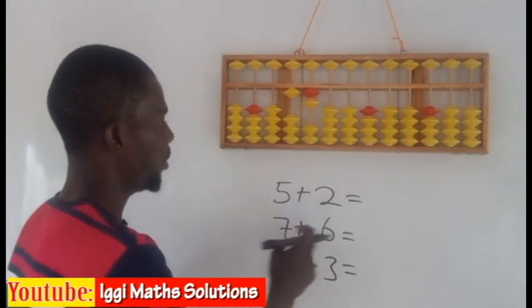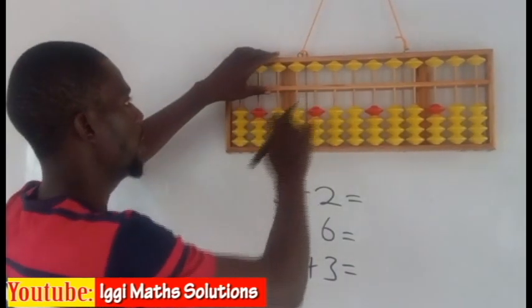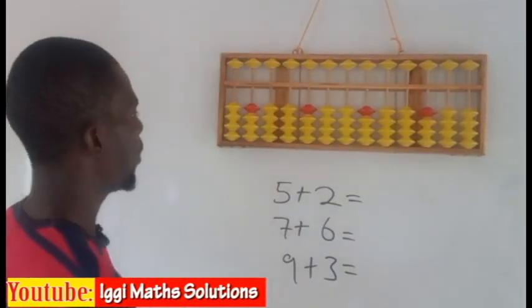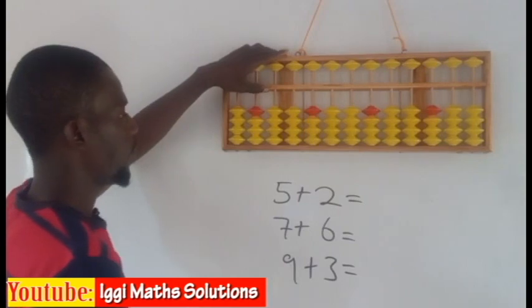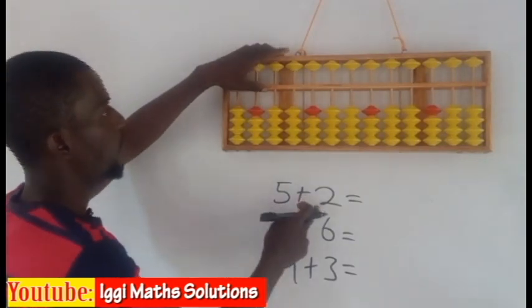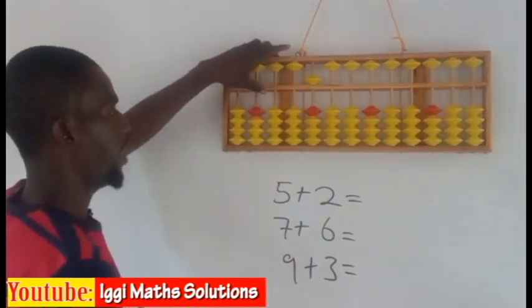We have 5 plus 2, we have 7 plus 6, 9 plus 3 on the abacus. So now let us make our abacus to be 0. Now by assuming this to be my unit, so I have 5 plus 2. I represent abacus 5 as this, this is 5,